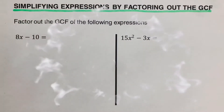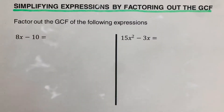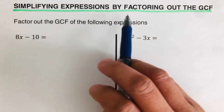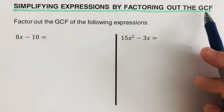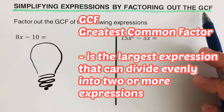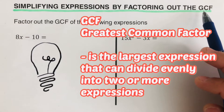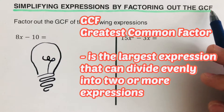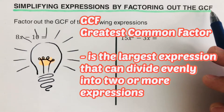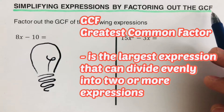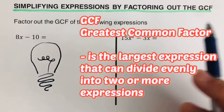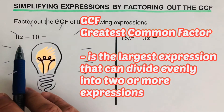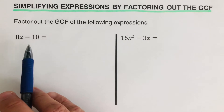Hello everyone. In this video we will be simplifying expressions by factoring out the GCF. GCF is an acronym which stands for Greatest Common Factor, defined as the largest expression that can divide evenly into two or more expressions. Now let's take this example: factor out the GCF of the following expression.